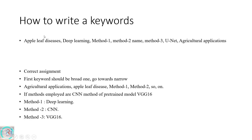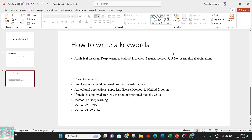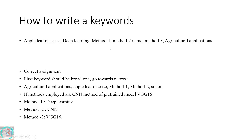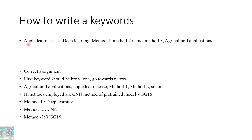So how to write a keyword? I have written some simple examples: apple leaf disease, deep learning, method one, method two, method three, agricultural applications. Whenever your project comes into the picture, you will be identifying the methods involved. These are the rough keywords we are going to start with. You can first write down all the keywords that are feasible for searching your paper.